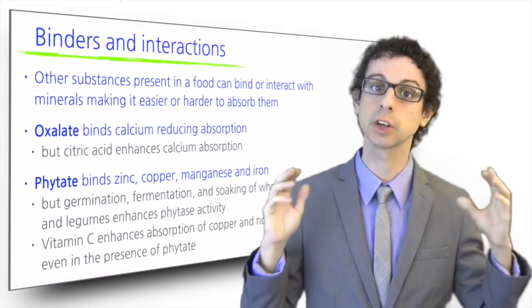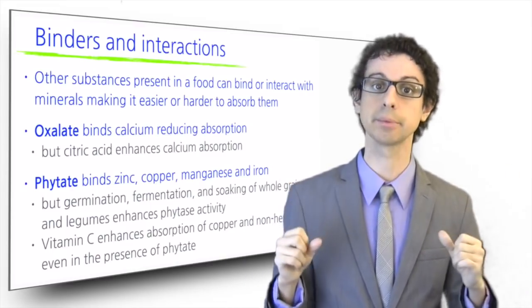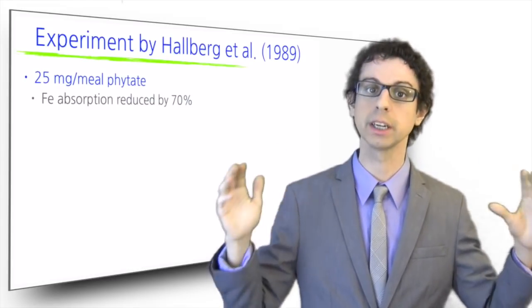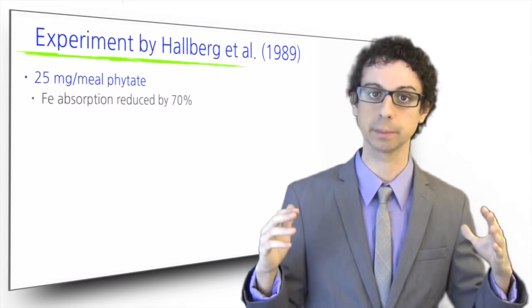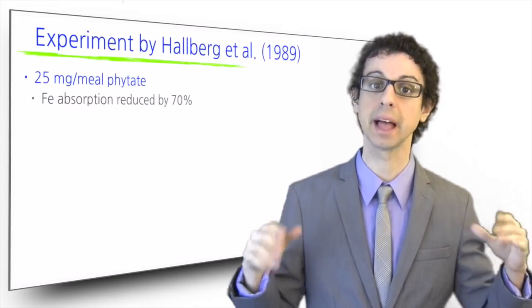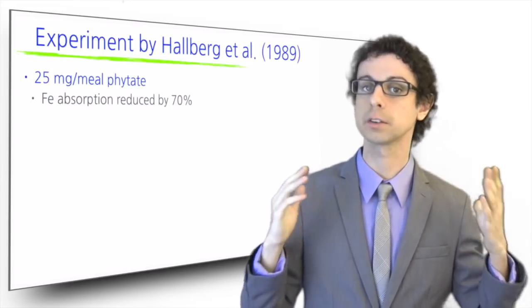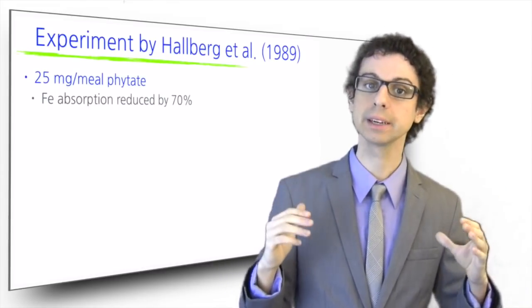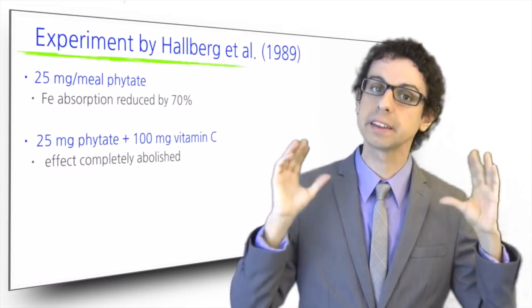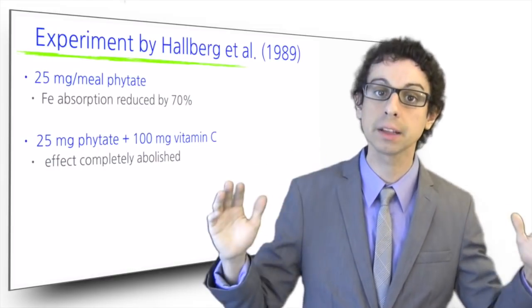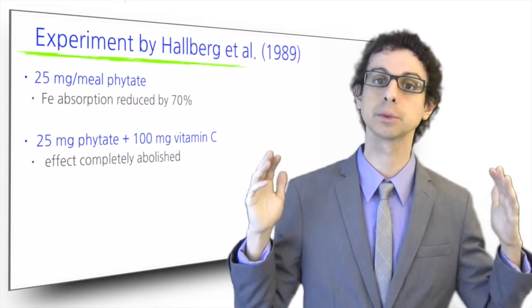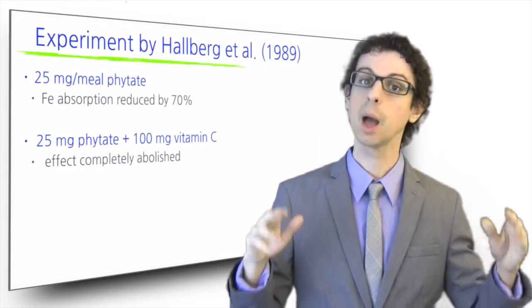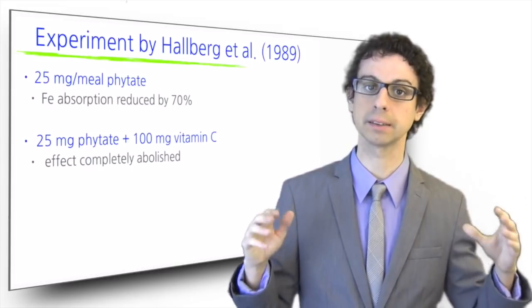Vitamin C enhances absorption of copper and non-heme iron, even in the presence of phytate. Look at this old experiment by Holberg and colleagues from 1989. He measured iron absorption in a group of volunteers following a standard meal. Then, he added a whole lot of phytate to the same meal and measured iron absorption again. Not surprisingly, iron absorption decreased by 70%. But then, together with phytate, he also gave 100mg of vitamin C. Lo and behold, this small amount of vitamin C was able to completely abolish the effect of phytate. In terms of phytate, it is a very good idea to maximize mineral absorption.